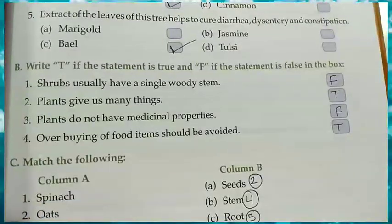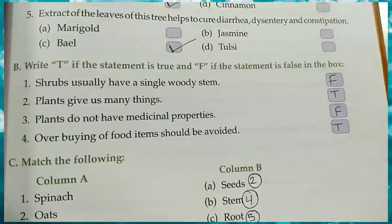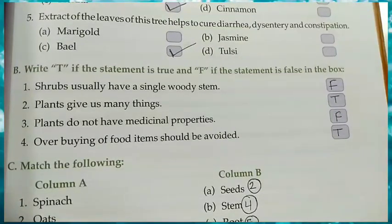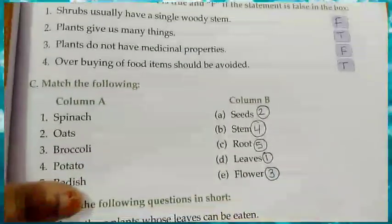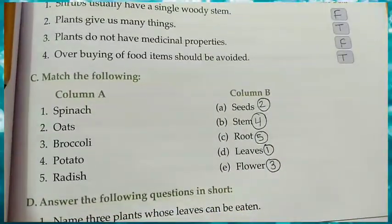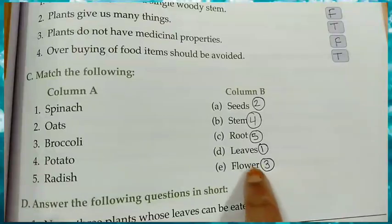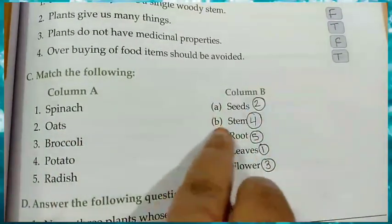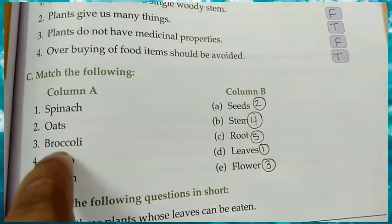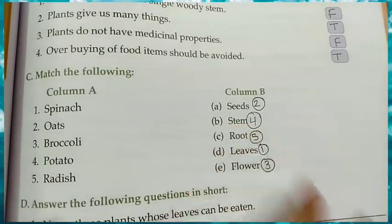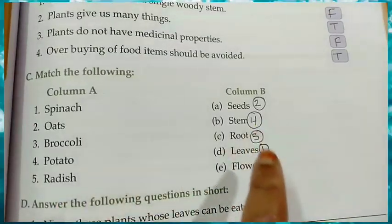Now true and false. Shrubs have a single woody stem — False. Plants give us many things — True. Plants do not have medicinal properties — False. Overbuying of food items should be avoided — True. Now match the column: Spinach — Leaves; Oats — Seeds; Broccoli — Flowers; Potato — Stem; Radish — Root.